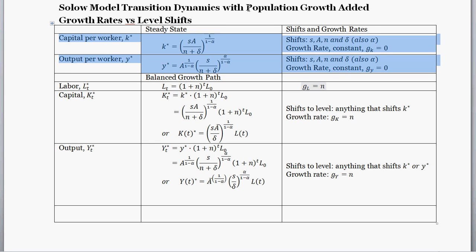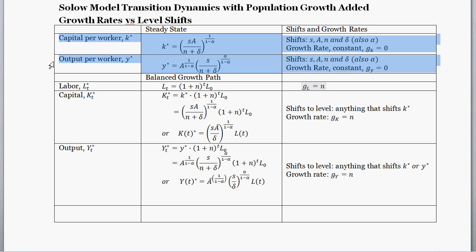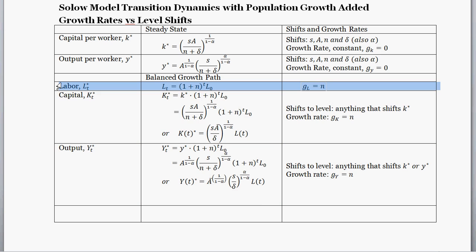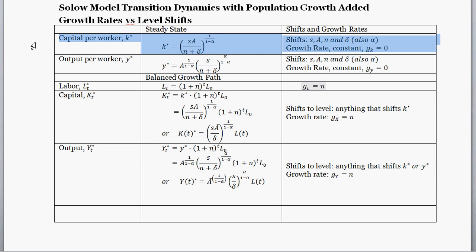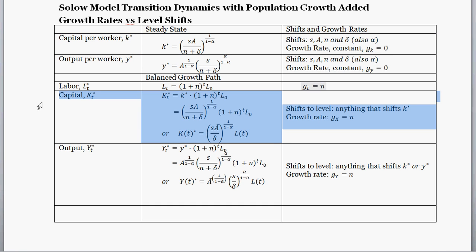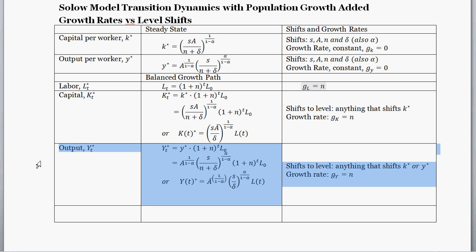When we add population growth into the model, we find a kind of interesting mix of steady states and growth rates. Per-capita stuff is still constant — the steady state level of output per worker and capital per worker is still constant. But labor is by definition growing, so even if our capital per worker is at a steady state, aggregate capital is going to be growing and output is going to be growing.